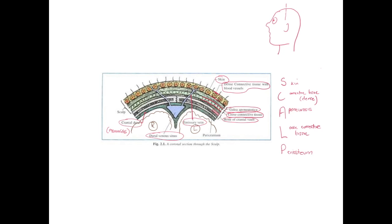Potentially, infections that are relatively superficial and involving the dense connective tissue layer of the scalp could travel from extracranial locations to intracranial locations — into these dural venous sinuses — as a result of these venous connections, the emissary veins.